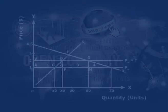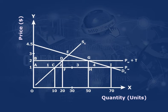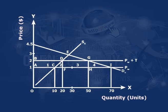Let us understand the cost and benefit analysis of tariff. We assume that nation A is a small nation. Nation A imposes an import tariff on commodity X. An imposition of tariff will not affect the international price but increases the domestic price of commodity in the nation. We measure quantity of commodity X on the X axis and price of commodity X on the Y axis. PW is the international price line which is parallel to the X axis, meaning that an imposition of tariff by a small nation cannot affect the international price. DX is the demand curve and SX is the supply curve of commodity X.